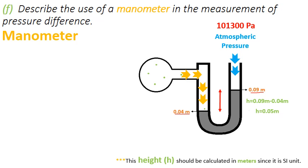There's a note at the bottom of the screen. This height should be calculated in meters since it is SI unit. Your ruler or your U-shaped tube can be marked in millimeters, centimeters, decimeters, or meters. Obviously we have to eventually get our value into meters since meter is the SI unit of the height or length or distance.